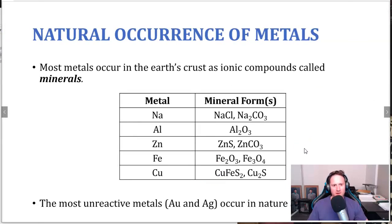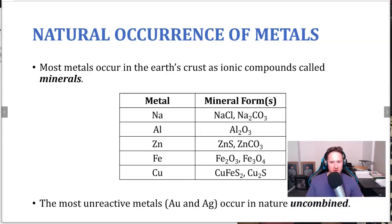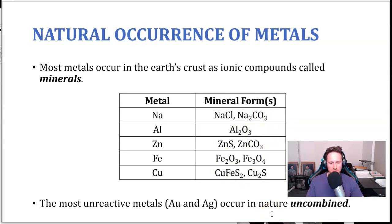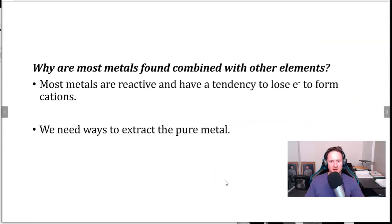The natural occurrence of metals — metals don't occur naturally uncombined; they're generally in a combined state, particularly the more reactive metals. Those combined forms are called minerals. Examples include sodium chloride and sodium carbonate as mineral forms containing sodium ions. The less reactive metals — gold, silver — are actually found uncombined in nature; panning for gold comes to mind, sifting for those specks of gold that exist uncombined. Most metals are found combined because they're reactive — they tend to lose electrons to form cations, which react with anions to form compounds. We need ways to extract the pure metal.